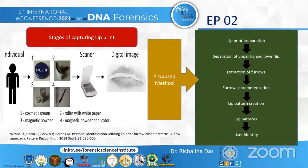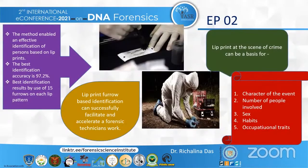Coming to the proposed method: first is lip print preparation, which takes place with the use of a white paper roller, magnetic powder, and a magnetic powder applicator. The lip prints are taken from each person, and all the prints are collected on a sheet of paper having the same dimensions, then they are scanned and centered so that the location within the image is uniform.